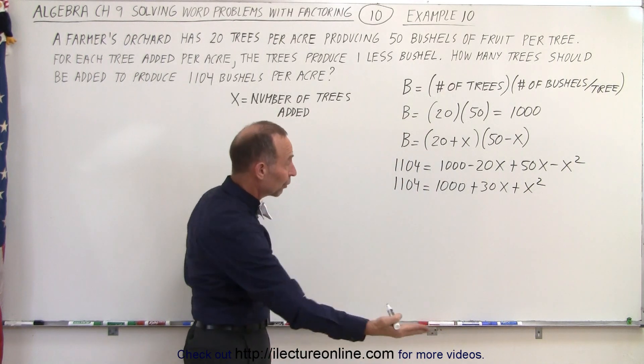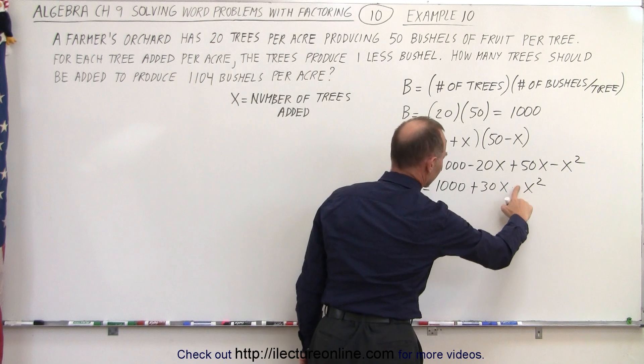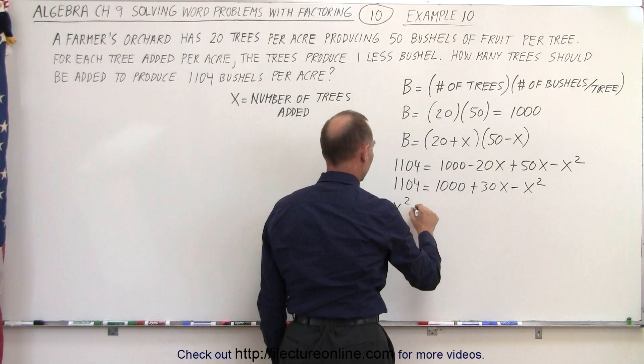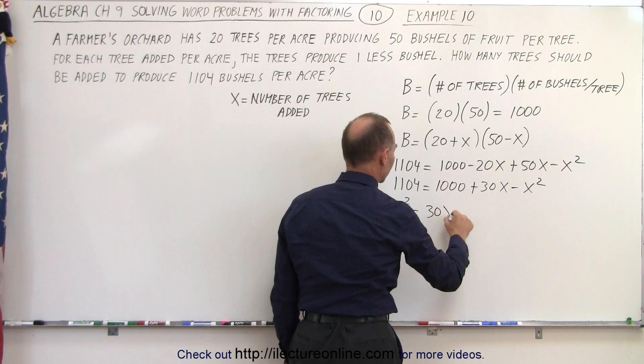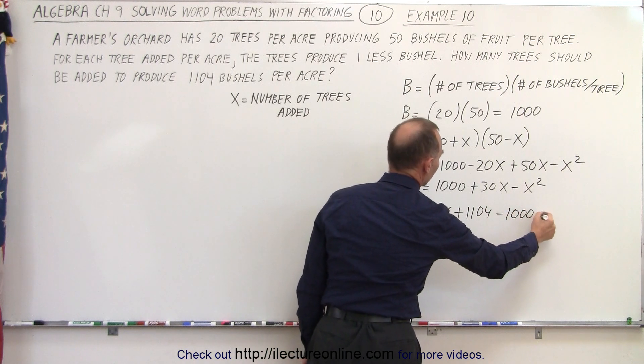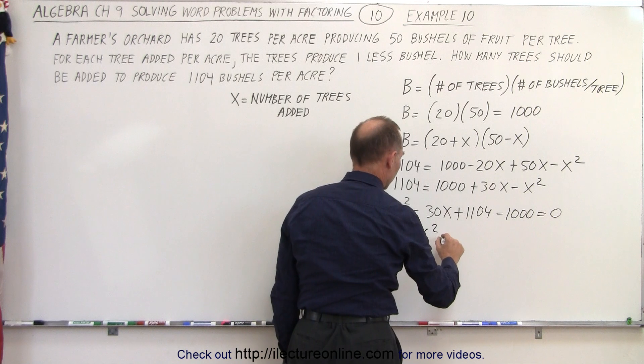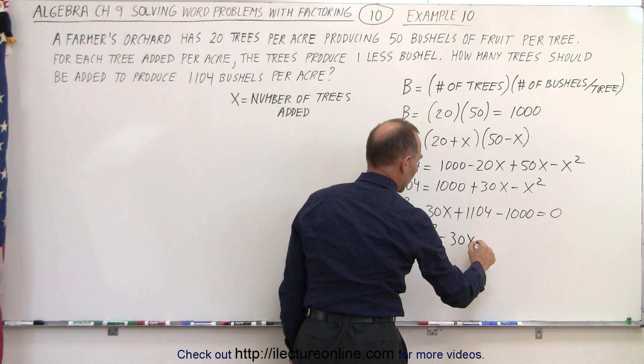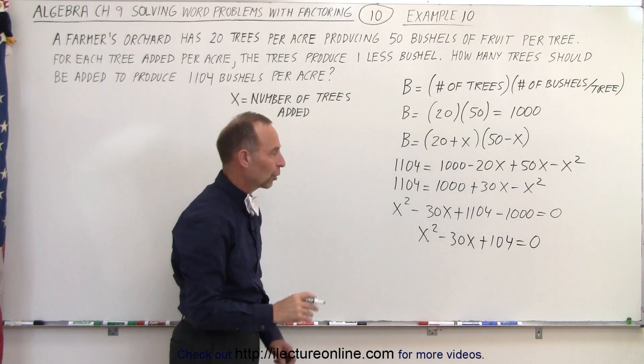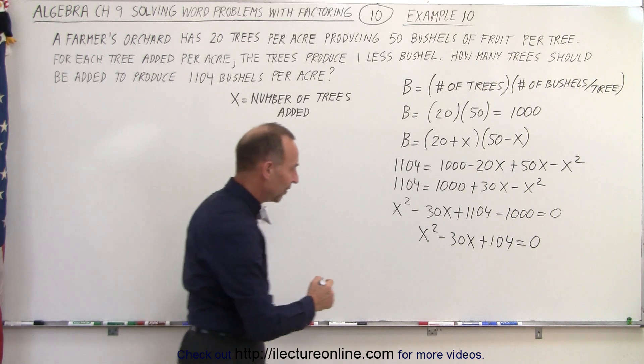And now we're going to move everything over to one side. That's not a plus, that's a minus. So now we move it across. Now it becomes minus x squared plus 30x plus 1,104 minus 1,000 equals 0. And combining those two, we get x squared minus 30x plus 104 equals 0. And now we have a quadratic equation in its standard format. Now we can factor that.